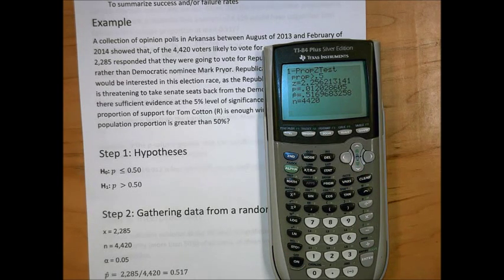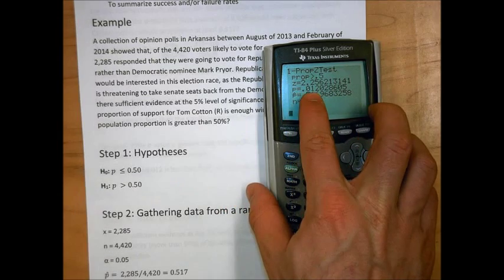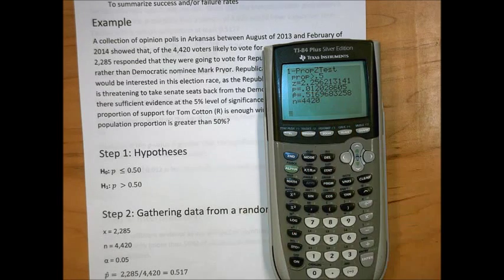Here we see a test statistic that rounds up to the 2.26 that we saw before, and we see a p-value that rounds to the .012 that we saw before. At this point, you can skip the math in step 3 and jump straight to step 4 and reject the null hypothesis because you can clearly see that the p-value of .012 is less than the significance level of 5%.